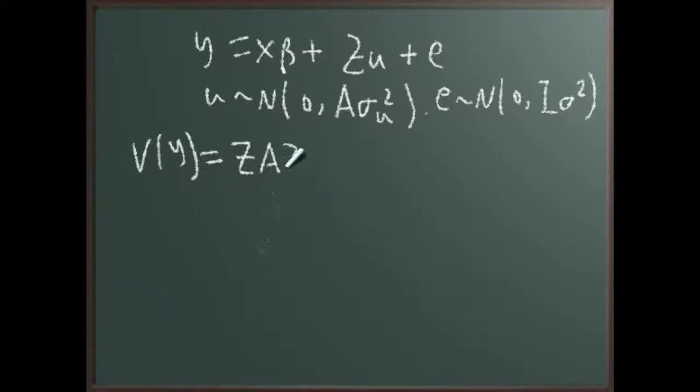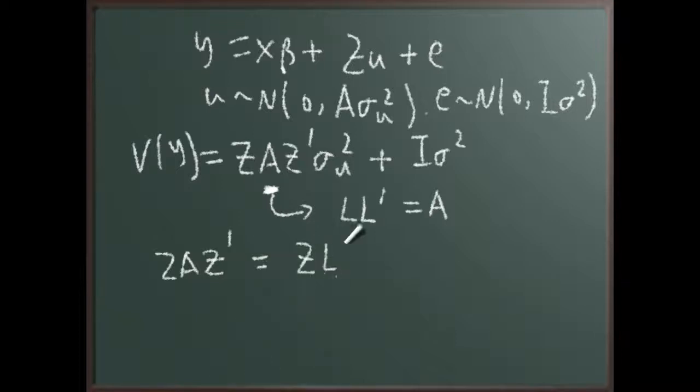So we get z a z transpose plus i sigma square. And if we do Cholesky decomposition on a, so that we get LL transpose equals a. So then, ZA Z transpose is actually ZLL transpose Z transpose, which is ZL ZL transpose.